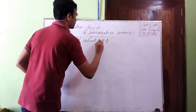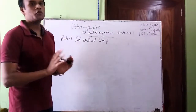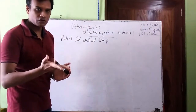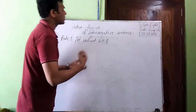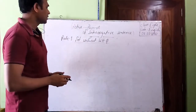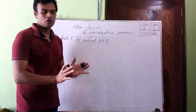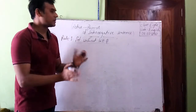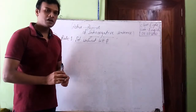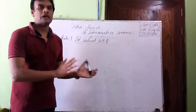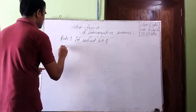Interrogative sentences can be of two types: with WH-question and without WH-question. Our first rule is about interrogative without WH-question. There is no exact rule for interrogative sentences in active to passive, so what we can do is turn it into passive following two steps.